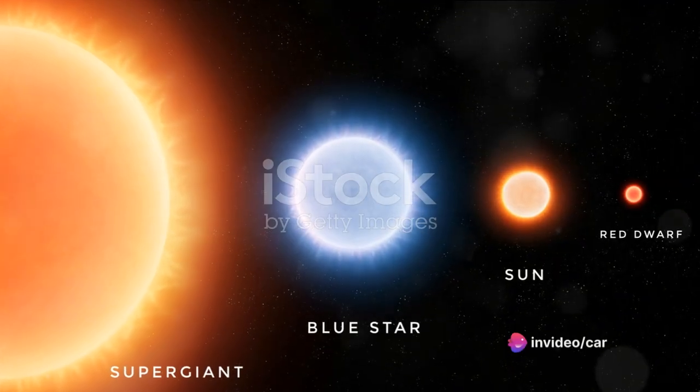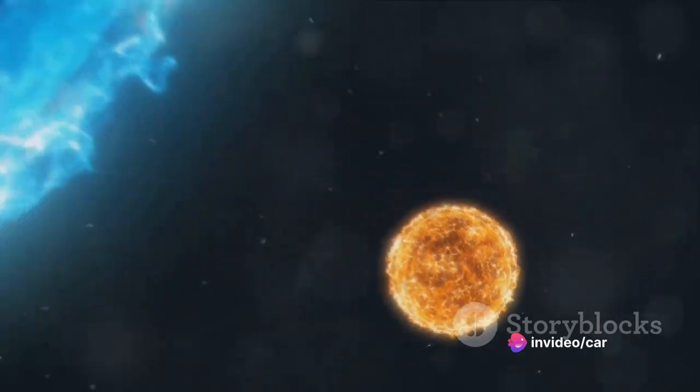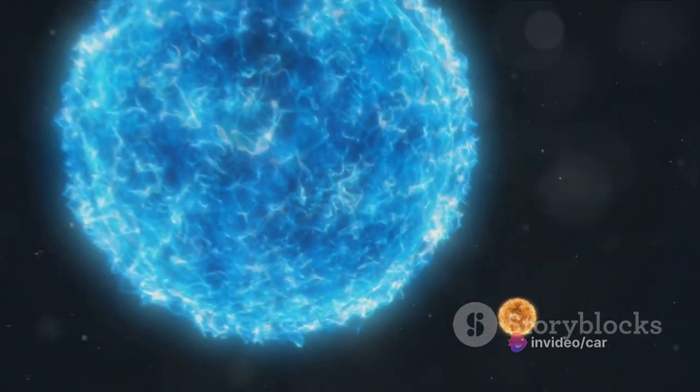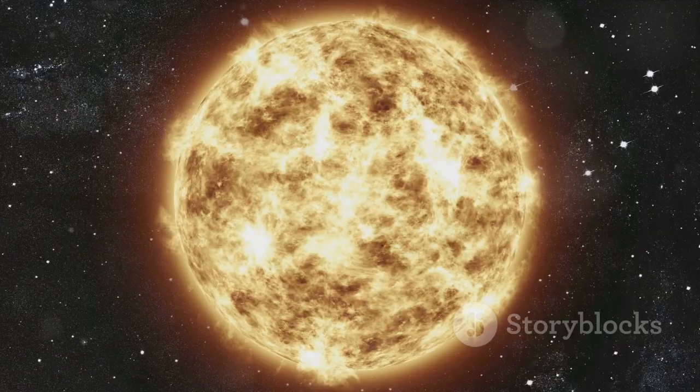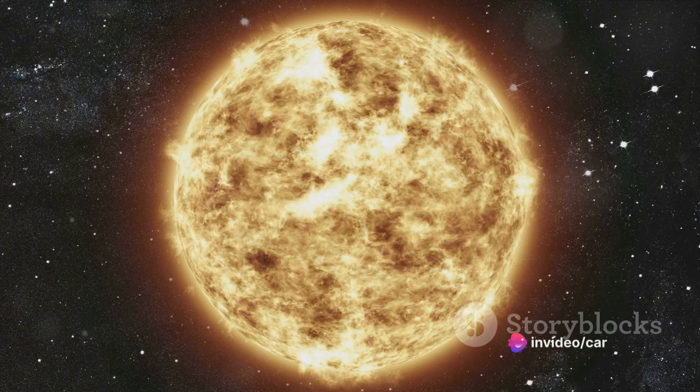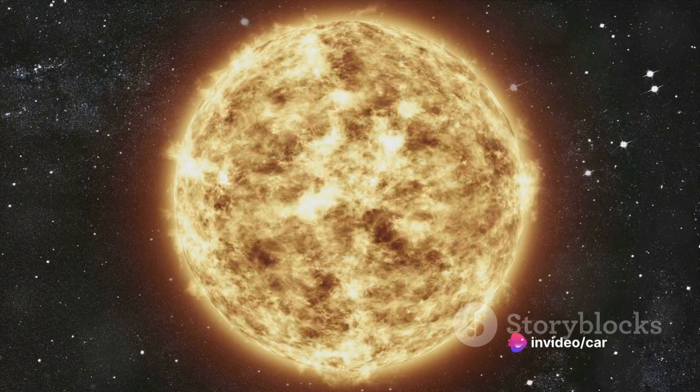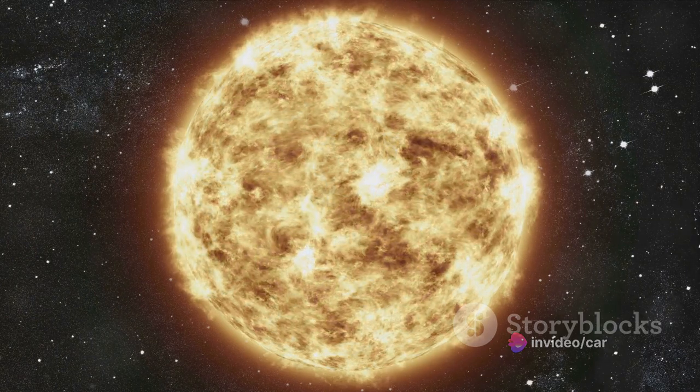The sun is a colossal sphere of hot plasma, radiating energy through nuclear fusion at its core. It's so large that over a million Earths could fit inside it. But if we compare it to the smallest known star, EBLM J055557 AB, our sun is about 2,100 times larger. This comparison, in itself, showcases the staggering diversity that exists within the cosmos.